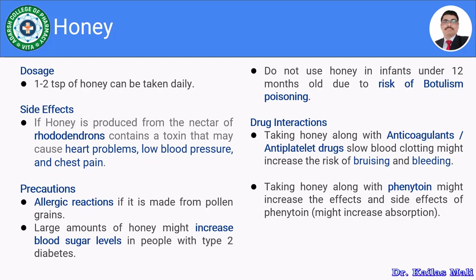There are two drug interactions. The first is taking honey along with anticoagulants and antiplatelet drugs, which slows blood clotting and may increase the risk of bruising and bleeding, as honey may thin the blood. Combining honey with anticoagulants such as warfarin or antiplatelet drugs such as aspirin may lead to bruising or bleeding.